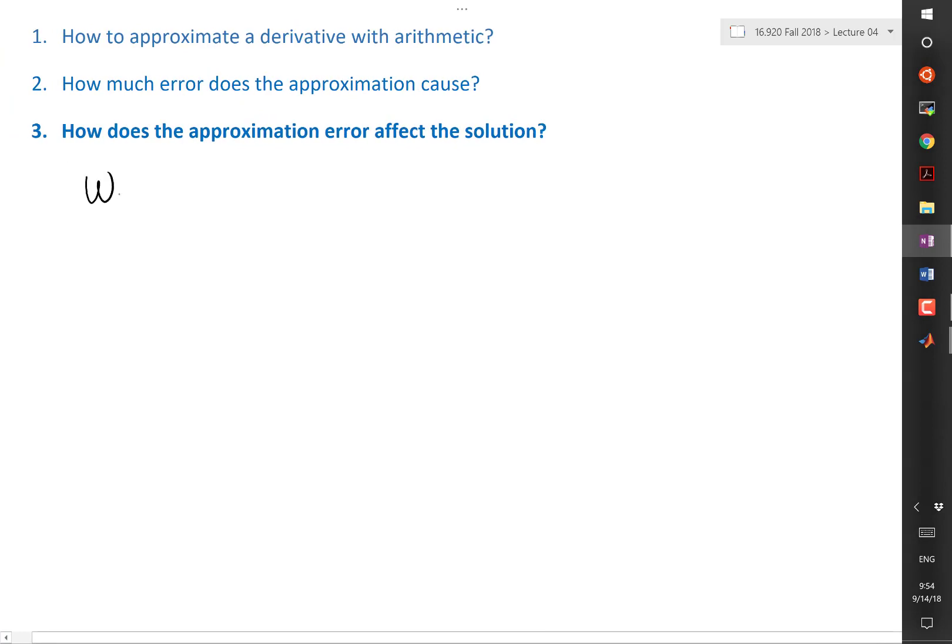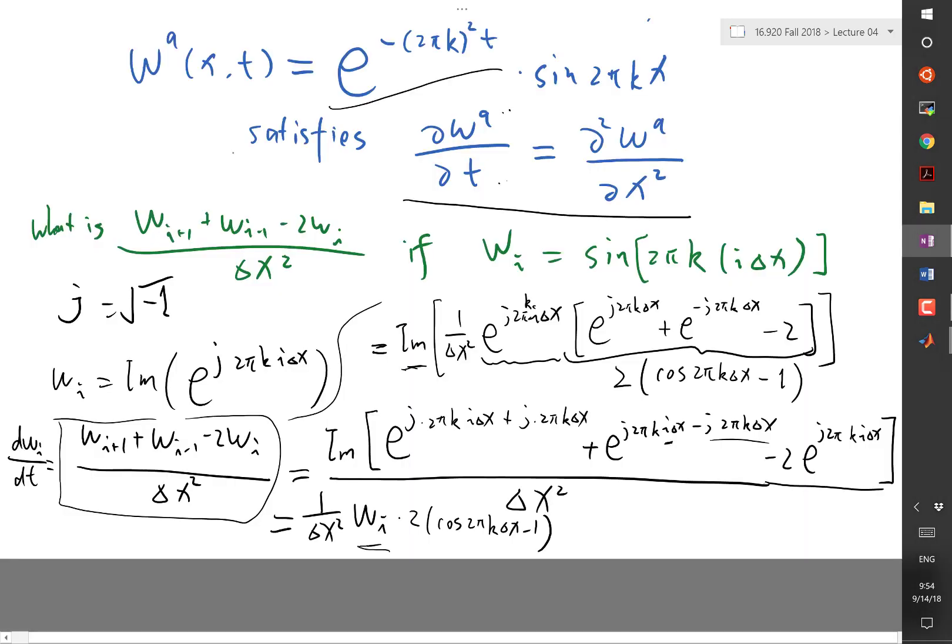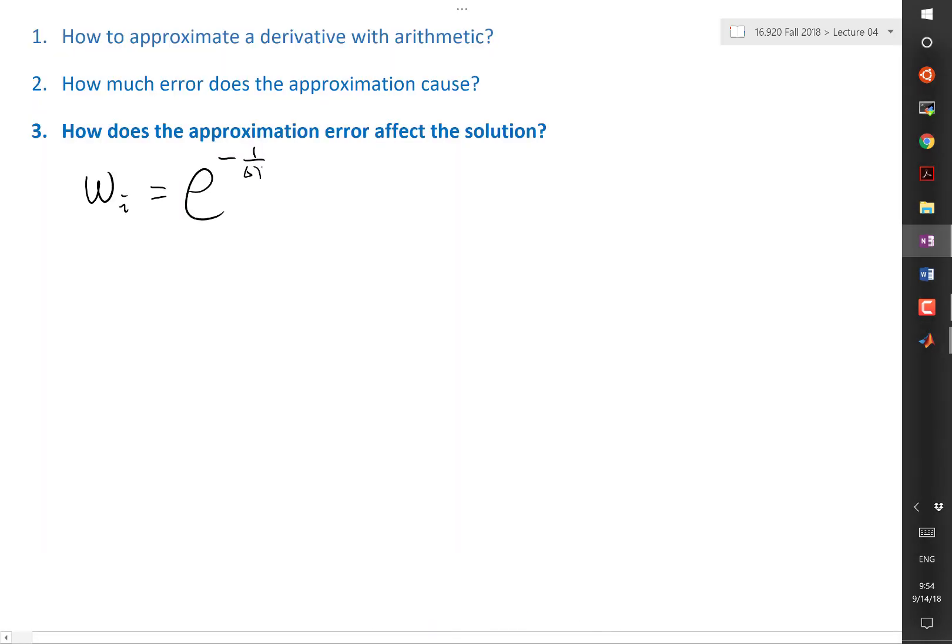So our w i numerical is equal to e to the minus 1 over delta x squared times 2 cosine 2 pi k delta x minus 1, right? Times t, of w i.